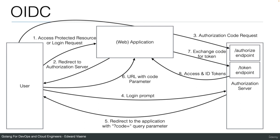The idea of OIDC is that we can have multiple applications with only one authorization server handling authentication. The authorization server distributes codes to users and tokens to applications. Applications can make API calls using the access token, and other application services can also validate a JWT as long as they have the public key available.